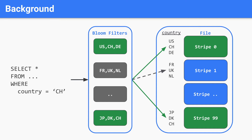KUKU Index addresses three issues with bloom filters in this scenario. First, one needs to probe multiple filters, which can be expensive. Second, a unique value such as CH might occur in multiple stripes and is hence stored redundantly in multiple filters. And third, filter lookups can be false positive, causing unnecessary IO.